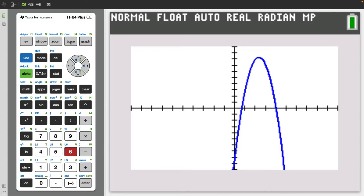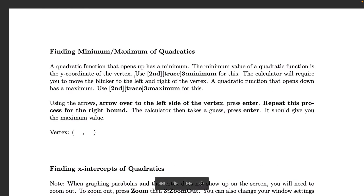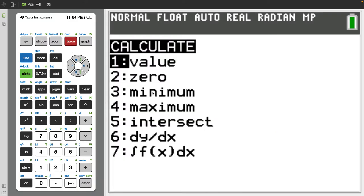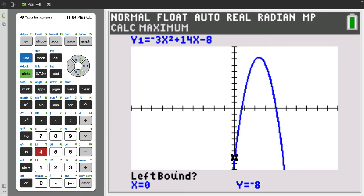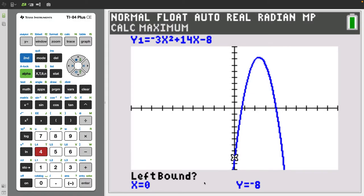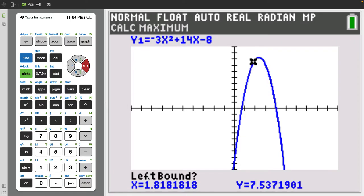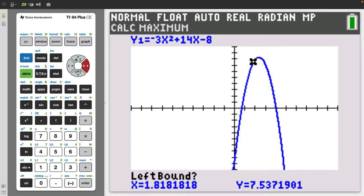We still select second and then trace. And here if it had been a minimum we would have selected three. But because we're looking for a maximum value we select four. And now it's going to ask us for a left bound. So here we want to try to help the computer out by going further to the right somewhat close to where the maximum is. It doesn't have to be precise but you want to stay towards the left of the actual maximum. And once you've done that once you've gotten close to it you want to press enter.